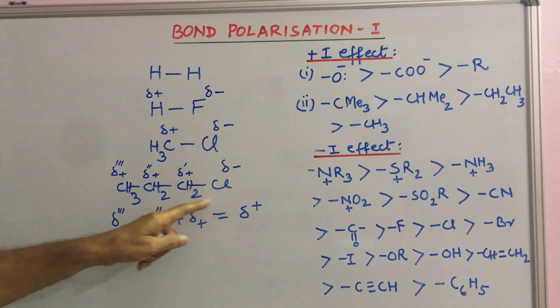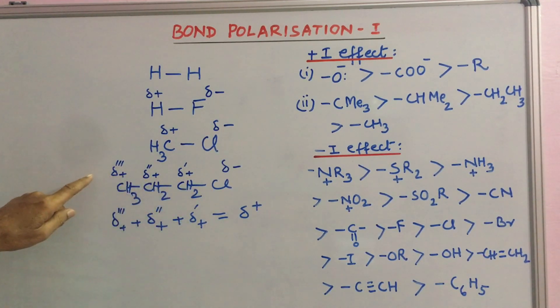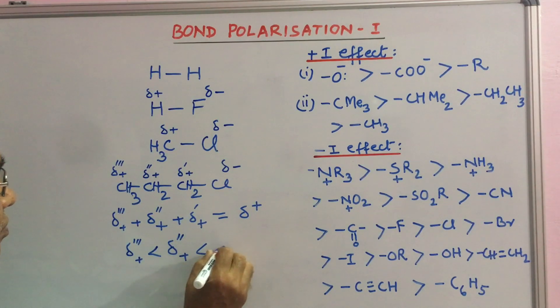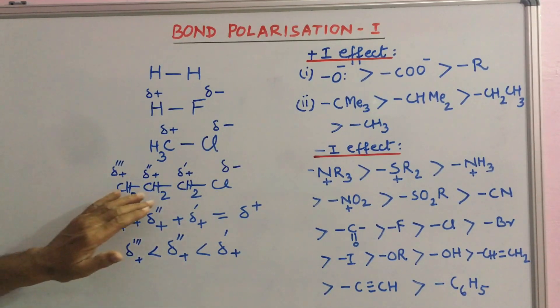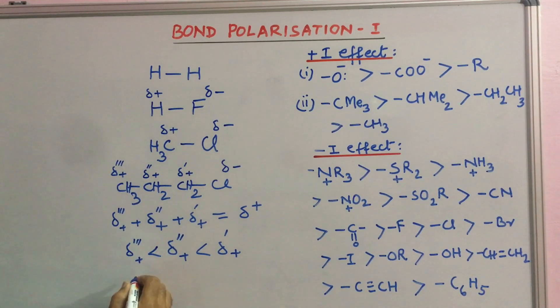As we go away from the source, that is towards this methyl group, the charge diminishes. Delta triple dash plus is smaller than delta double dash plus. This dispersal of charge over the chain is by induction. Therefore, this is known as inductive effect.